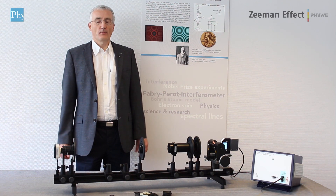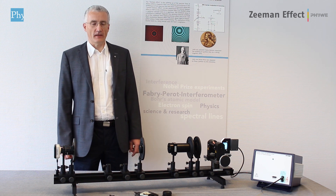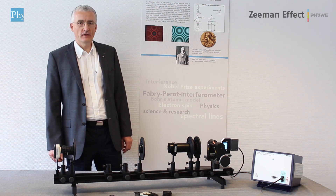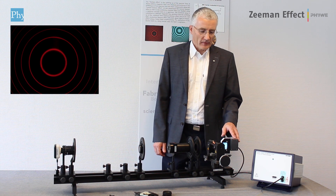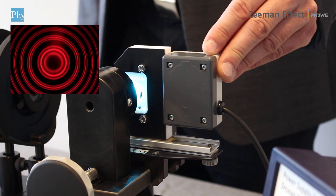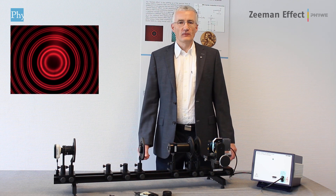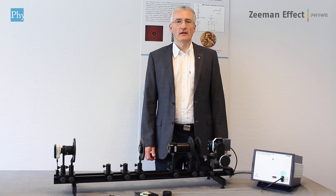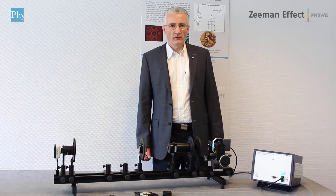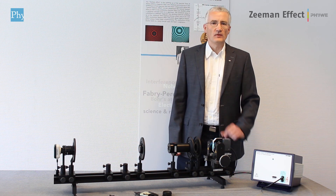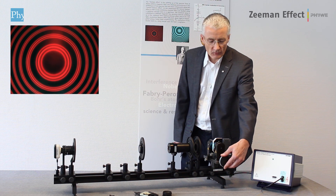Here is the setup of the normal Ziemann effect. We will now split one spectral line into three spectral lines. To do that, we insert the lamp into the magnetic field by sliding it inside. Now you see three spectral lines. We can now further optimize the separation of the three lines by increasing the magnetic field strength. We do this by decreasing the distance between the pole shoes — we just turn the spindle knob to do that.